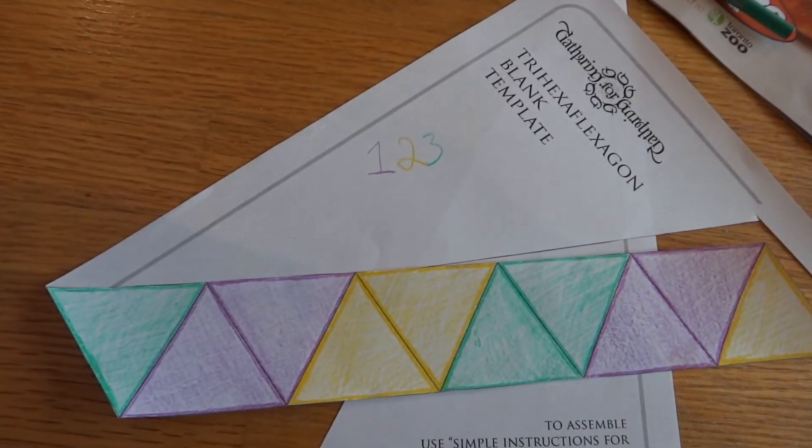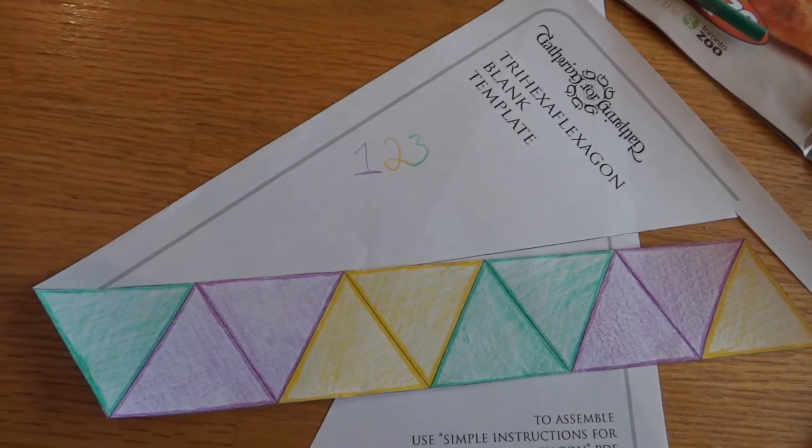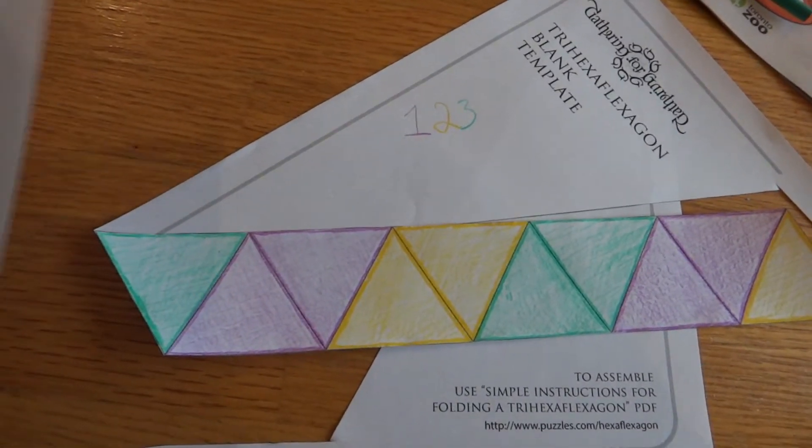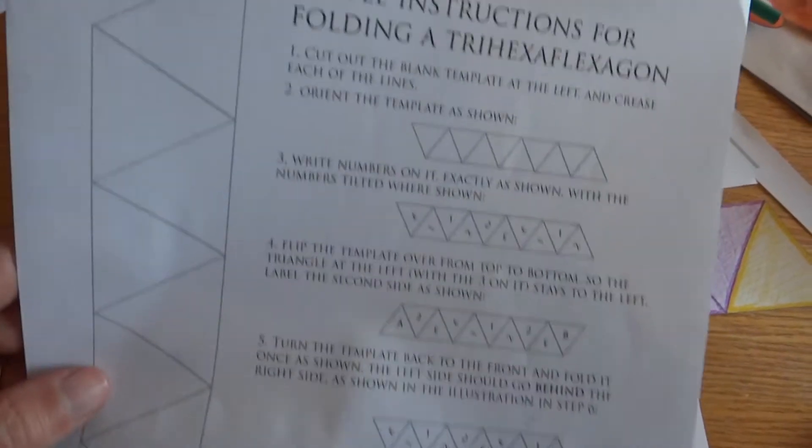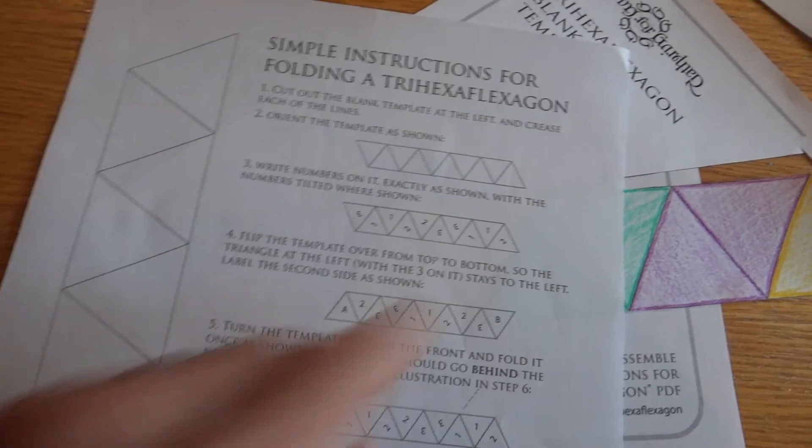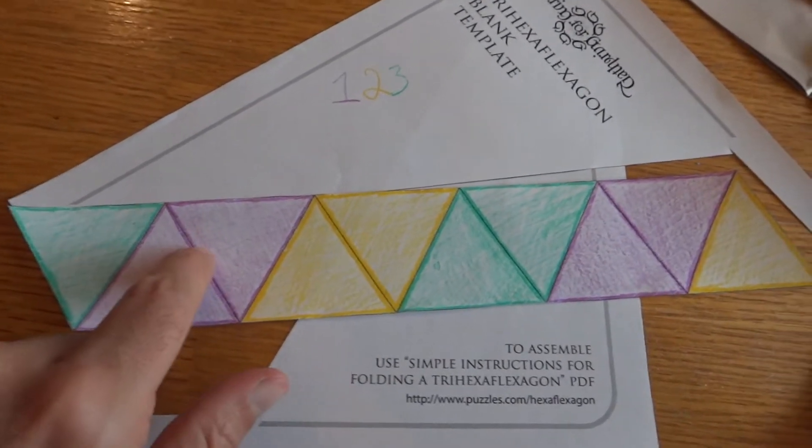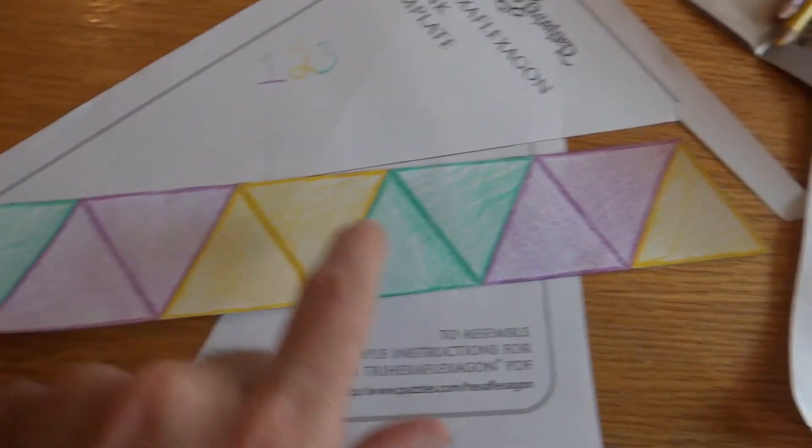So we've got our tri-hexa-flexagon blank template from the Gathering for Gardner site. I've colored mine in according to the simple instructions for folding. So the numbers here, what I've done is I've assigned a color to each number. I've done the threes, the ones, and the twos.